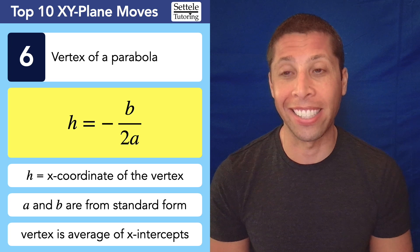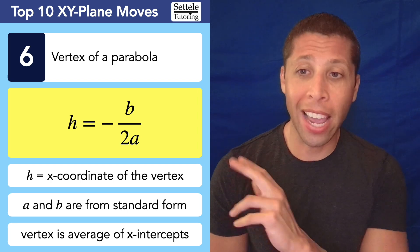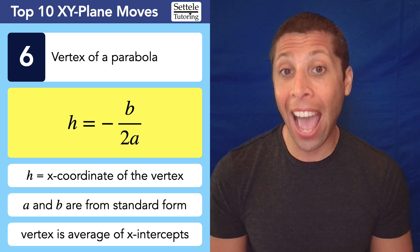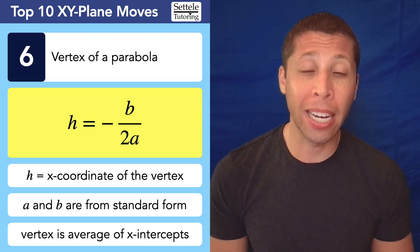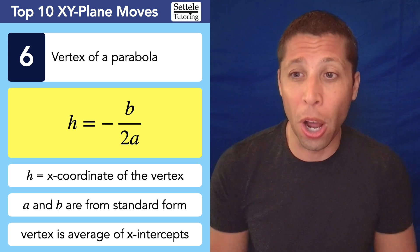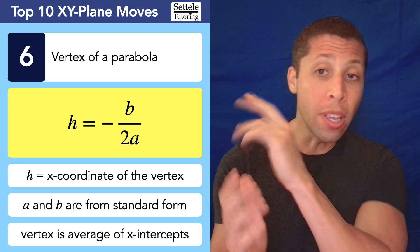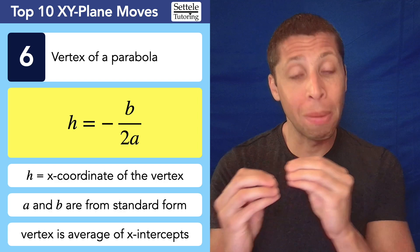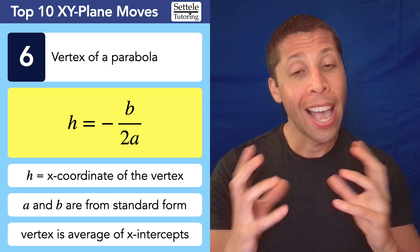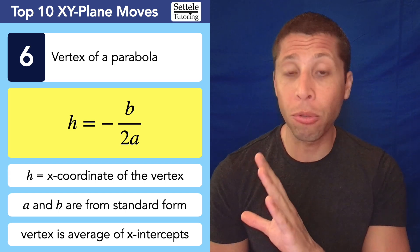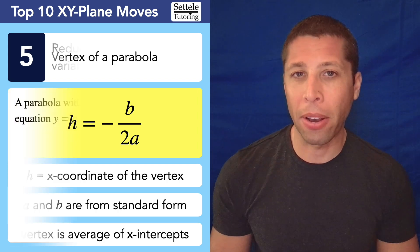Number 6: the vertex formula — h equals negative b over 2a. If they start talking about the vertex of a parabola, write this on your page. The h is the x-coordinate of the vertex; a and b come from the standard form of a quadratic. Also related: the vertex is the average of the x-intercepts. This helps you move between vertex form and standard form, or between vertex form and factored form. The SAT loves the vertex, and this formula is simple — I use it a lot.